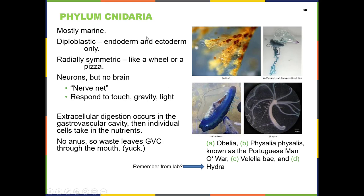The first phylum in the Eumetazoa are the cnidarians — the 'c' is silent in this phylum name. Cnidarians live mostly in the ocean, in salt water. They are diploblastic, meaning they only have two tissue layers: endoderm and ectoderm. They are radially symmetric — like a wheel or a pizza — so you can cut through the center in virtually any direction and see two mirror image halves.